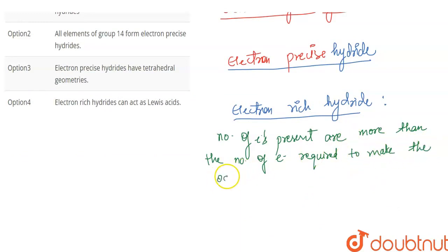Required basically to make the octet. So, electron-rich hydrates, the main example is the group 15 electron-rich hydride like ammonia. It is electron-rich because nitrogen has a lone pair.